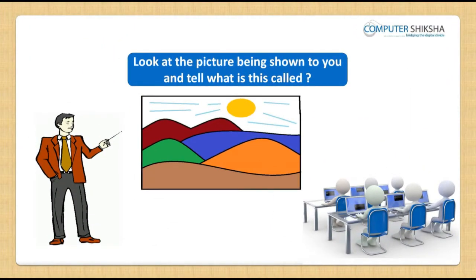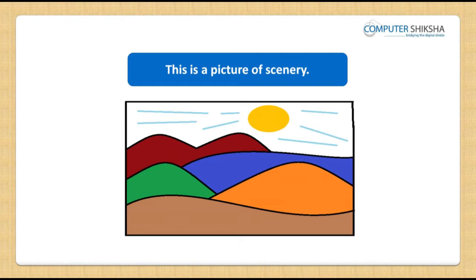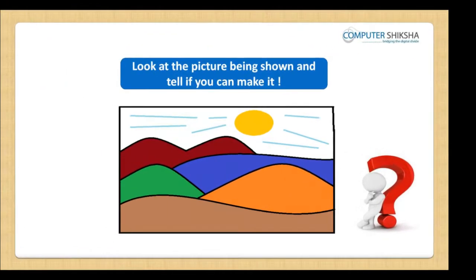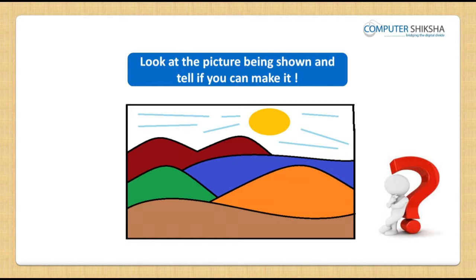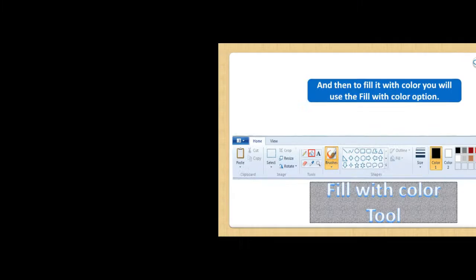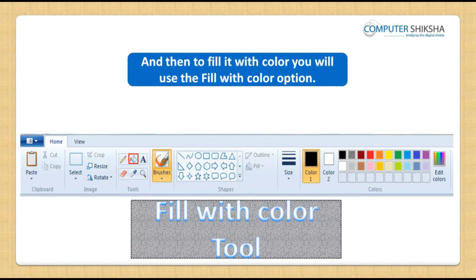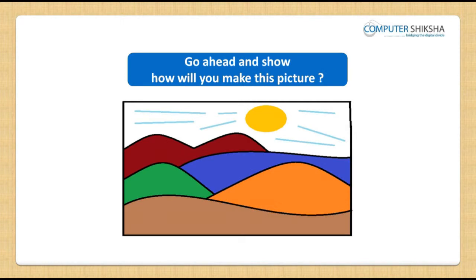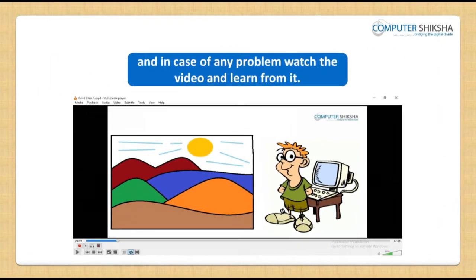Look at the picture being shown to you and tell what is this called. This is a picture of a scenery. Look at the picture being shown and tell if you can make it. You will need to use the Curve tool to make this picture, and then to fill it with color, you will use the Fill with Color option.